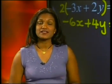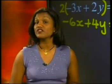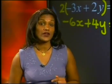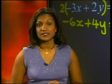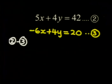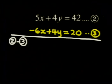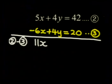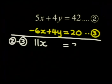Now I need to subtract. I can subtract equation 3 from equation 2 or the other way around. Either way the y's will be eliminated. I'm going to work with equation 2 minus equation 3. I get 5x minus minus 6x which gives me 11x. 4y minus 4y cancels the y's out. 42 minus 20 gives me 22. x is equal to 2.